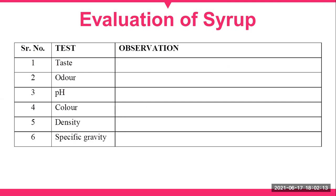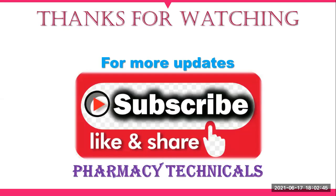For evaluation, the syrup is assessed for its taste — generally sweet, or different flavors can be added. Its odor can also be checked. The pH of the solution needs to be measured, along with color, density, and specific gravity. These are the basic evaluation tests for herbal syrup. This concludes the formulation and evaluation of herbal syrup. Thanks for watching the video.